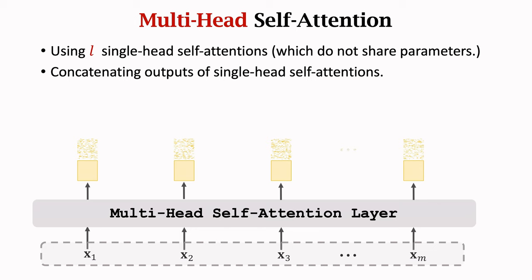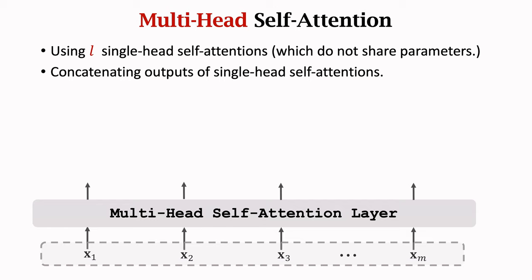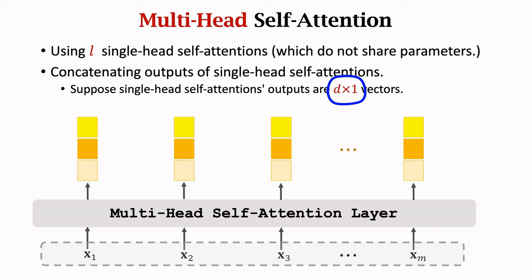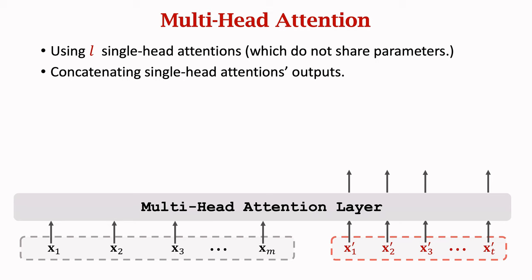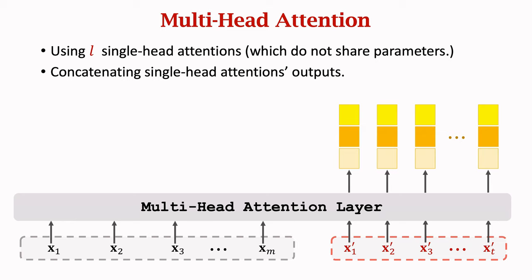Each single-head self-attention outputs a sequence of context vectors. If we run l single-head self-attentions, then the outputs are l sequences of context vectors. The concatenations of the context vectors are the outputs of the multi-head self-attention. Suppose single-head self-attention outputs are d-dimensional vectors. Then multi-head outputs are ld-dimensional vectors. Analogously, we can do the same for attention layers. We independently run many single-head attentions, and their combination is the multi-head attention. Each single-head attention has its own parameters which are not shared.